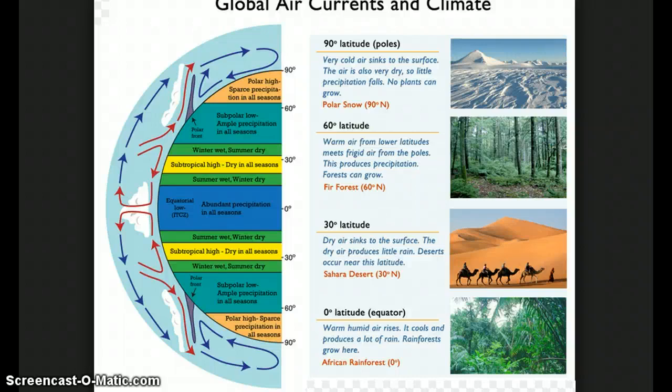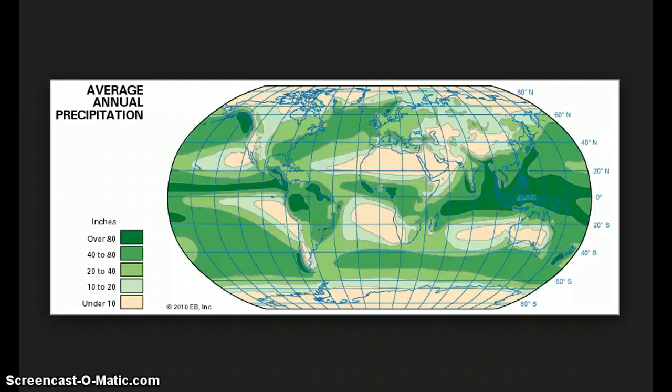If we look at a map that shows the average annual precipitation, we can see that at the north and south poles, they actually get about under 10 inches of precipitation a year. But that precipitation just never melts. It stays there for thousands of years.